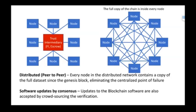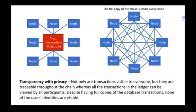The software updates by consensus, so it's crowdsourced. If a change doesn't match the hash, it's rejected. There's transparency with privacy — not all transactions are visible to everyone, but they are traceable throughout the chain. And despite having full copies of the database transactions, none of the users' identities are visible.